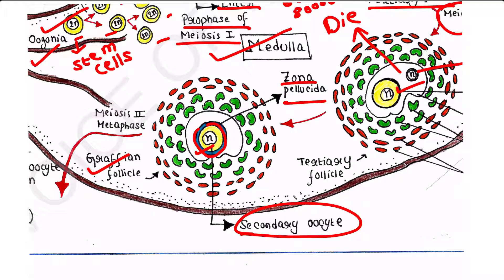Now the secondary oocyte begins meiosis 2 but then stops in metaphase stage. It will not complete meiosis 2. Instead, it will stop in the metaphase stage.